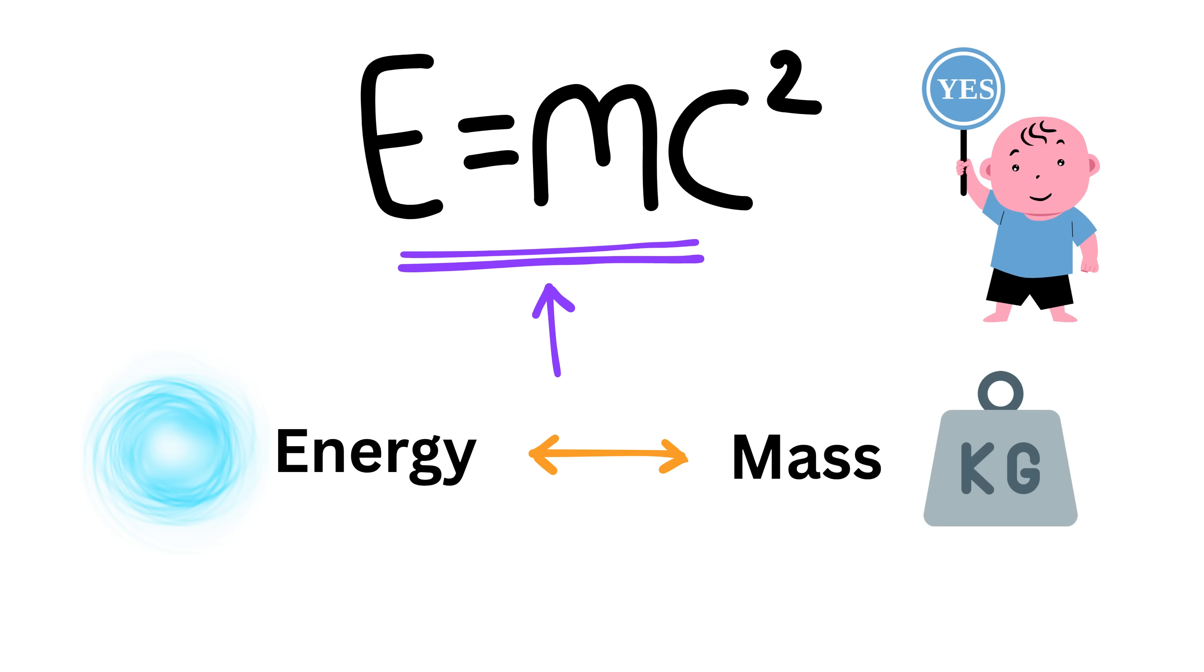But now the main question is, does all energy come from mass? You would say yes because this equation seems to suggest so. But here's the twist: there are things in nature that have zero mass. So what about objects that have no mass at all?